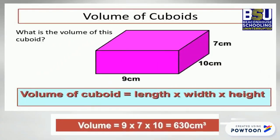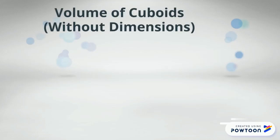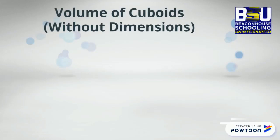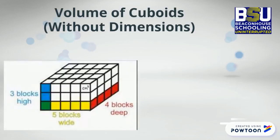So it's simple. To find the volume of any cuboid, you multiply the given 3 dimensions, and you have your volume. In case you're not provided with the dimensions, you can always find the volume by counting the cubes.